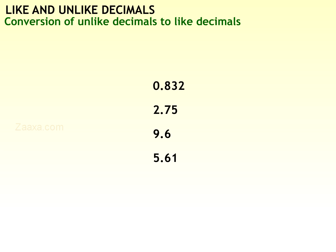Now let us learn to convert unlike decimals to like decimals. To convert unlike decimals to like decimals, we have to make the number of digits after the decimal point equal in all the numbers. We do this by adding as many zeros as we need at the end of the numbers that have fewer digits in the decimal part. Adding zeros at the end to the right side of the decimal point does not change the value of the number.